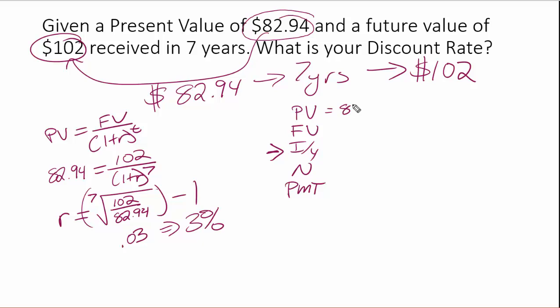So that means we have to plug something into each of these four other components. We know that our present value here is going to be 8294, future value is 102, the interest rate is what we don't know, so that's what we're solving for. N is going to be 7, because we have 7 years, and our payment is going to be 0.